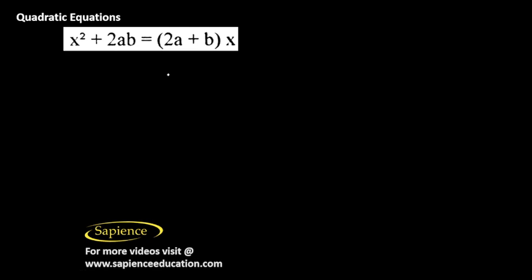Now let us solve this quadratic equation. Let us make it into the general form x square. Let's take whatever the term that is present in the right-hand side to the left-hand side.